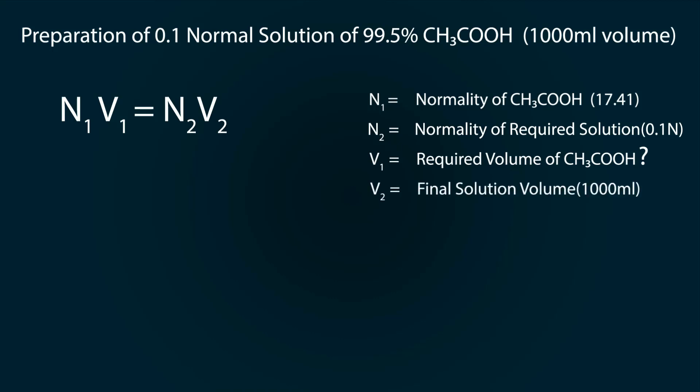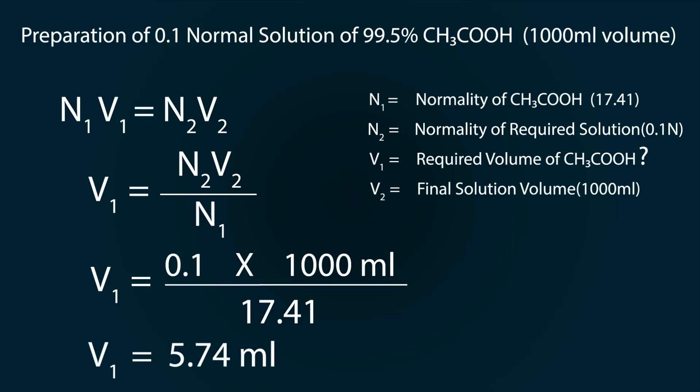Now rearrange the formula and put all the values in it: V₁ = 0.1 × 1000 / 17.41, and we get our volume as 5.74 milliliters. Let's start preparation.